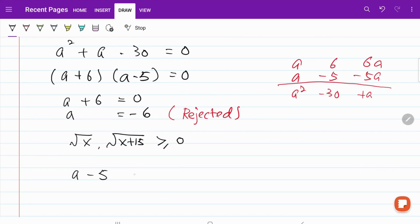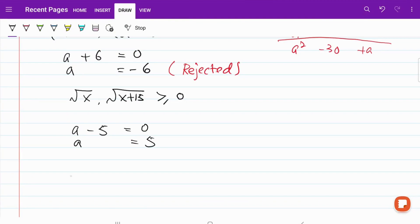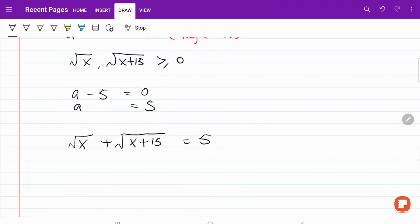Let's work on our second possible answer. A minus 5 equals to 0. A will be equal to 5. So now I know square root of x plus square root of x plus 15 is equal to 5. Let's go ahead and solve for x.